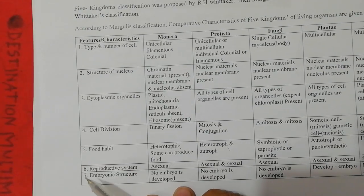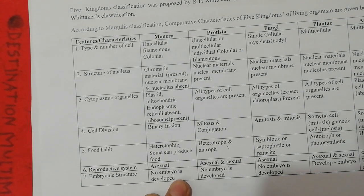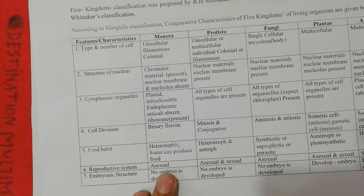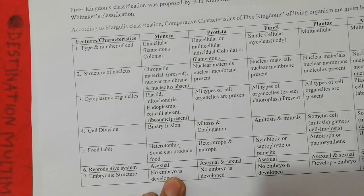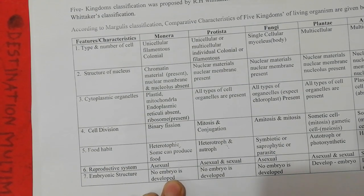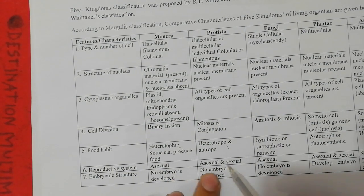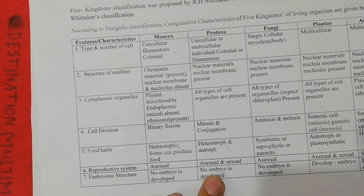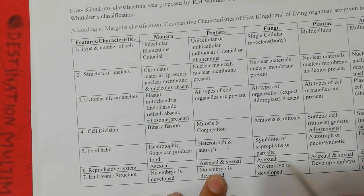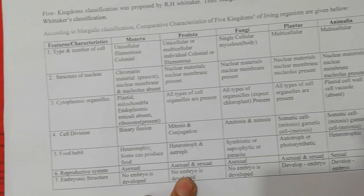The sixth feature is the reproductive system. The reproductive system varies across the five kingdoms — they can be asexual or sexual in their reproductive methods.